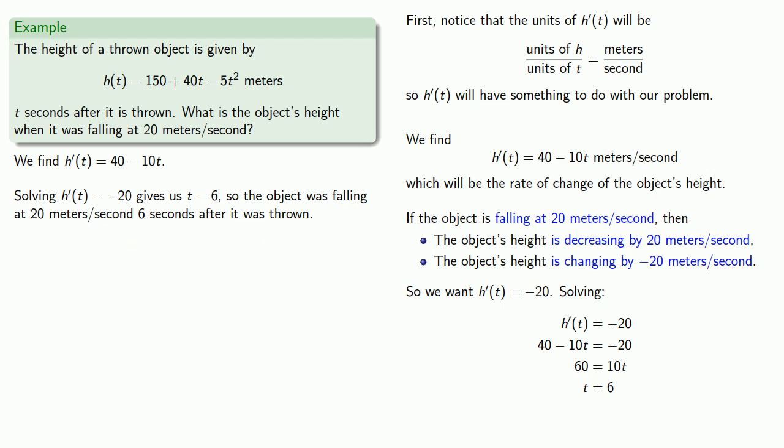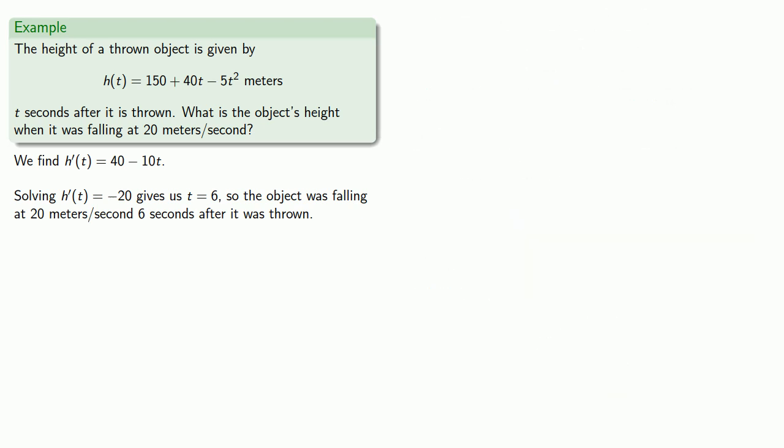This is a good answer. The problem is it's not actually the answer to our question. However, that shouldn't stop us from writing it down. Any information at all is useful and there's nothing wrong with providing more information than we need. In this particular case, t equals 6 is relevant to our problem because it tells us when the object was falling at 20 meters per second.